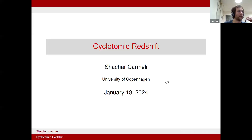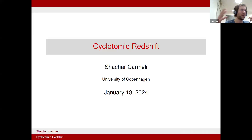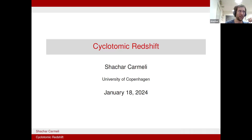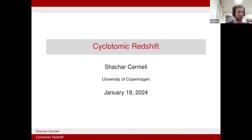Today I will talk about cyclotomic redshifts. That's a general project aimed at understanding K-theory after chromatic localization and various ways in which it redshifts — namely, increase by one the height of various things to which you can assign a canonical height in chromatic homotopy theory. Redshift here is only meant as a word to say increasing height by one, and cyclotomic is just one sample of chromatic phenomena that K-theory is going to increase by one. It's actually part of a much larger principle that K-theory increases height of things by one.